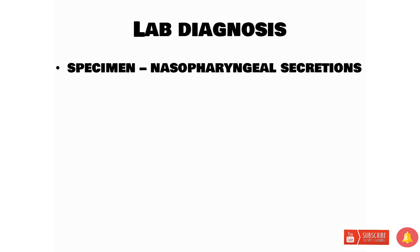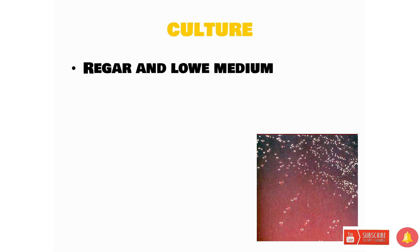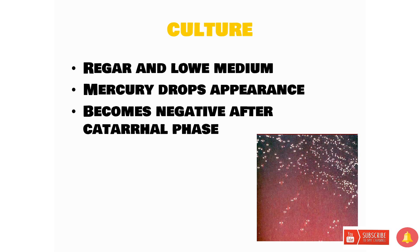To diagnose pertussis, specimens are taken from the nasopharynx using swabs like an alginate swab or dacron swab. Culture is performed in special media — the Regan-Lowe medium — because Bordetella pertussis is a fastidious bacterium requiring special culture media. The typical appearance seen on Regan-Lowe medium is a mercury drops appearance.